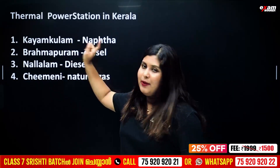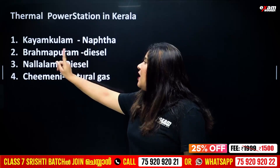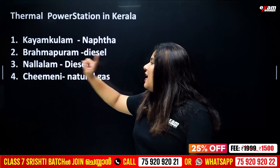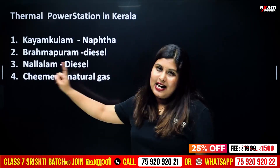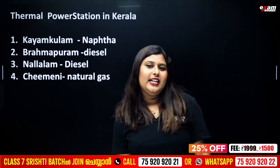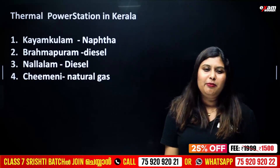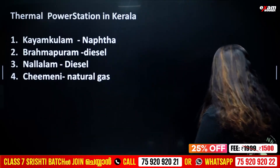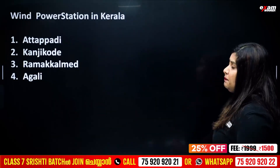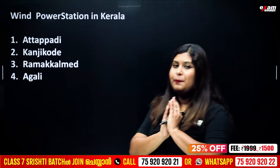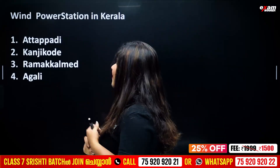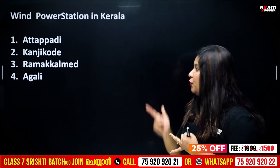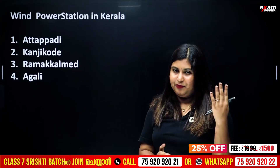Brahma means Brahmapuram, Null means Nullam, and Chiemeni. For wind power stations: Kandikoda, Ramakal Meda, and Agli are the wind power station locations.